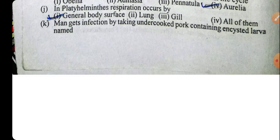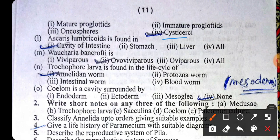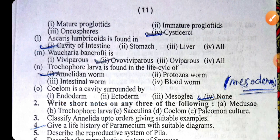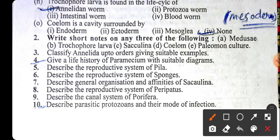The answer is cysticercus. Cysticercus is found in a cavity of the intestine. Victoria van kraft is an omnivorous animal. Trochophore larva is found in the life cycle of annelidan worm. Coelom is the cavity surrounded by mesoderm — the answer is mesoderm, though the mesoderm option was not given in the question. Notes and long questions are available in the video playlist.